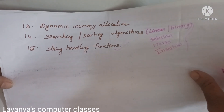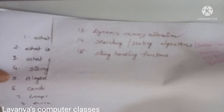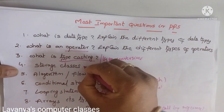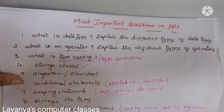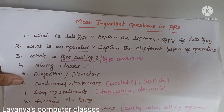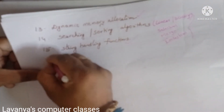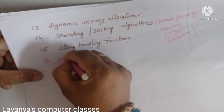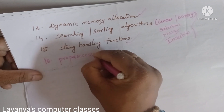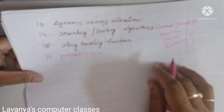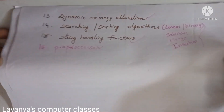These are the very important questions. For theory questions, you must learn dynamic memory allocation, storage classes, typecasting or type conversion, enum — which is also an important question — and preprocessor commands. From these five topics, one question is compulsory in the examination. Dynamic memory allocation is also a very important question.